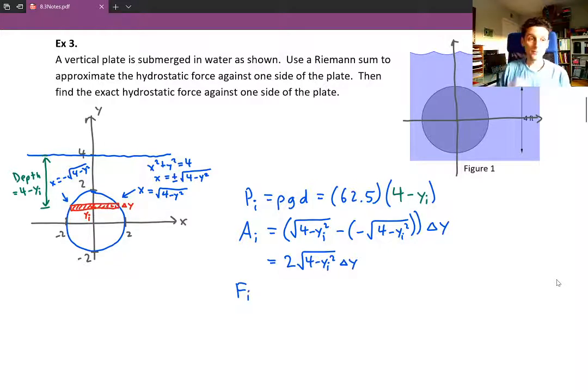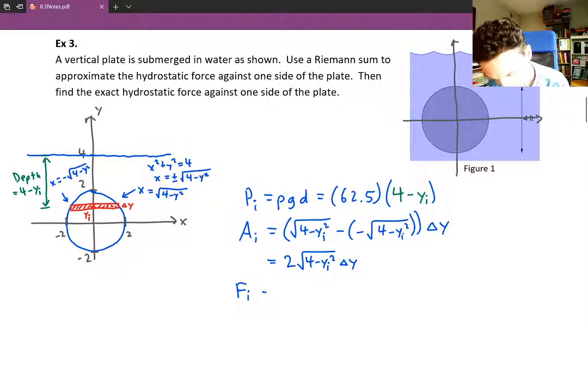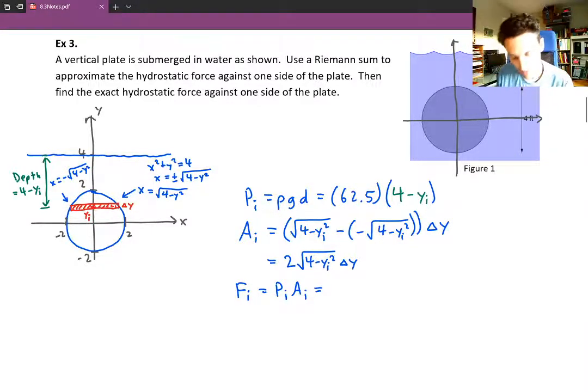Now to find the force acting on that little strip, we're going to take the pressure that we found, the area that we found, and multiply them together. The 2 times the 62.5 will give us 125. Then we have 4 minus y sub i from the pressure, and we have the square root of 4 minus y sub i squared, delta y from the area.